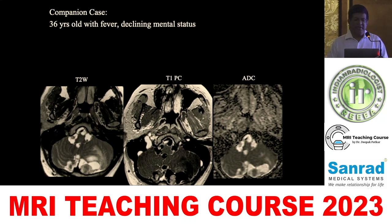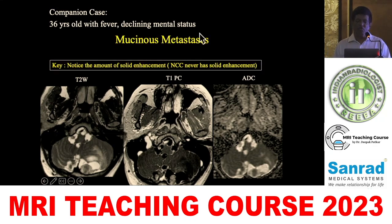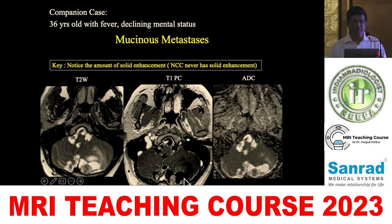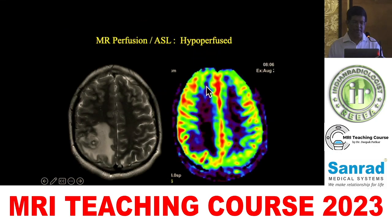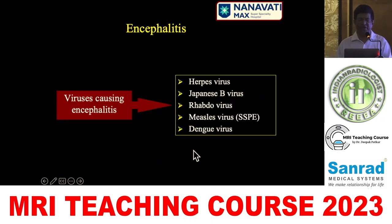You should not mistake cystic metastases, typically from mucinous carcinomas of the colon or stomach, for cysticercus cysts, as they also have a scolex-like and cystic appearance. However, in metastases the scolex-like structure and cystic component are much larger, and the nodule is much bigger. MR spectroscopy will show presence of lactate, alanine, succinate, and reduced choline. Most are hypoperfused unless in a post-treatment stage where peripheral hyperperfusion is seen.